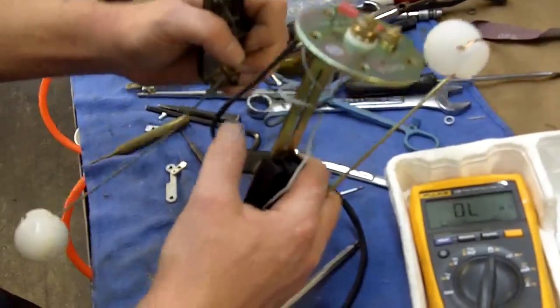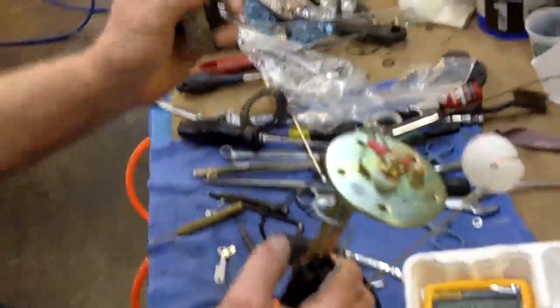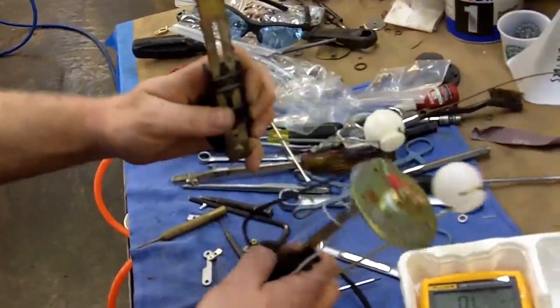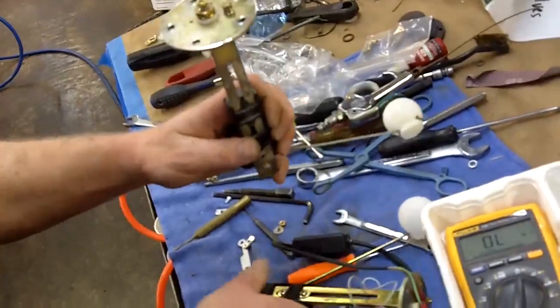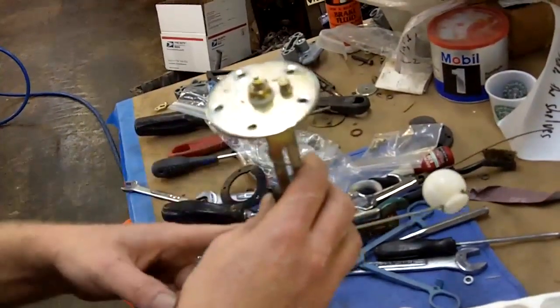I think what needs to happen is the top needs to be rotated 180 degrees so that the mechanism fits in the tank this direction, and then in order for the gauge to read correctly, the float then can come out the correct side and work.